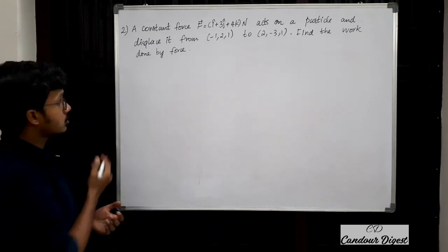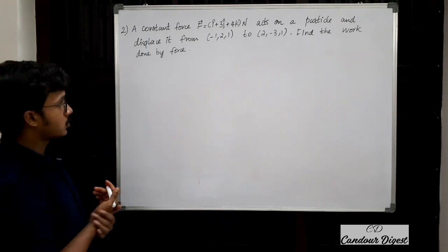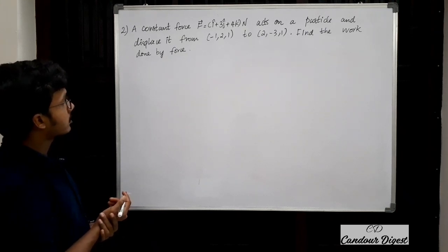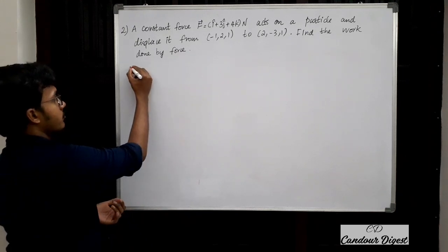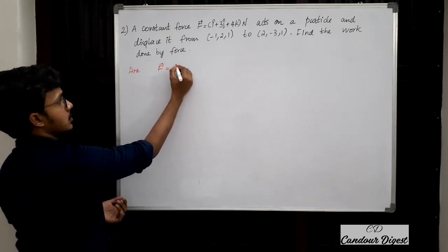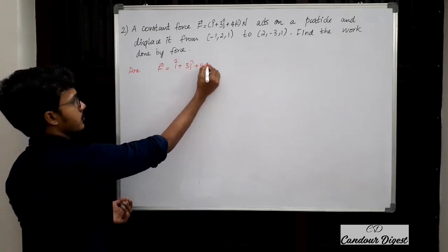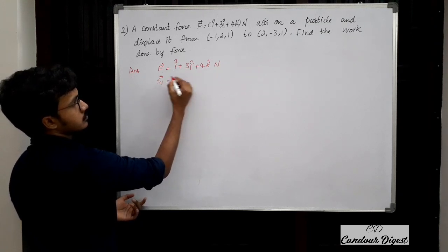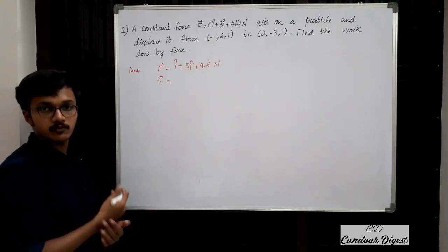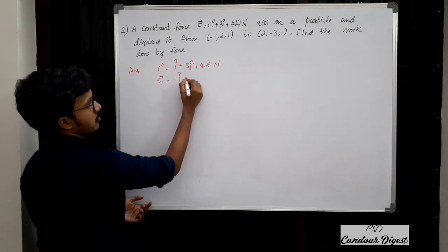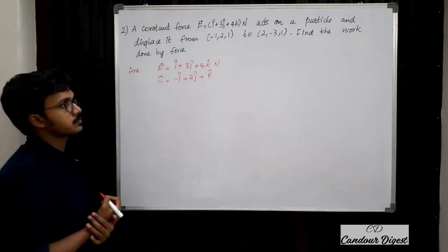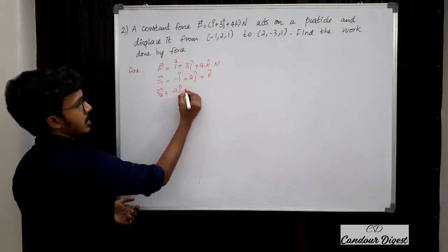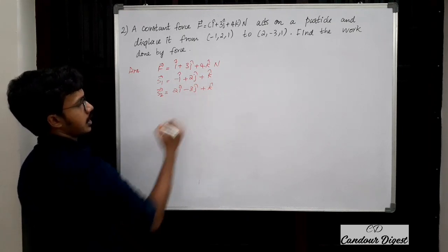Next question. A constant force F = î + 3ĵ + 4k̂ Newtons acts on a particle and displaces it from position (−1, 2, 1) to (2, −3, 1). Find the work done by the force. Force F = î + 3ĵ + 4k̂ N. Initial position S1 = −î + 2ĵ + k̂. Final position S2 = 2î − 3ĵ + k̂.